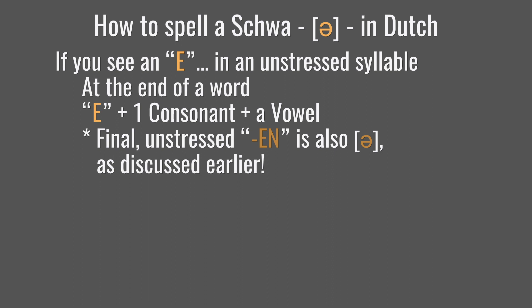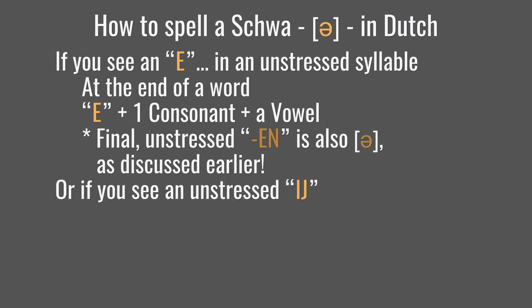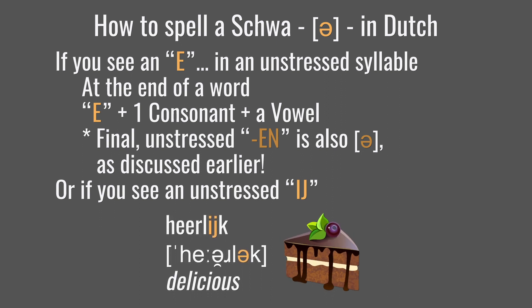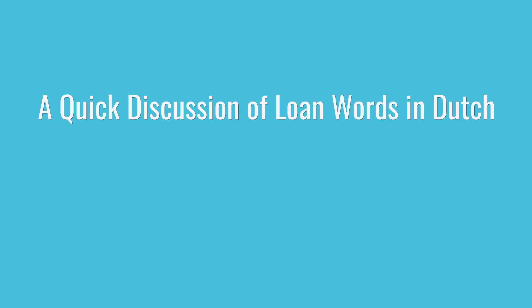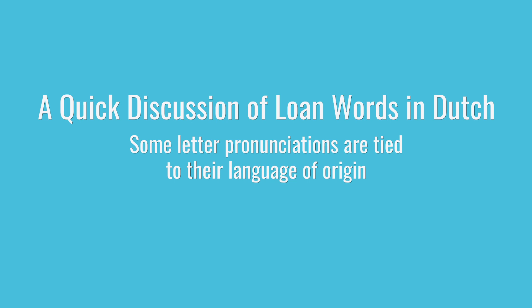We have one more vowel topic to cover and that has to do with the schwa — the unstressed uh sound we talked about in the last video. Schwa shows up in two possible spellings. One, whenever you see an e that by the rules we just discussed should be a long e sound, meaning that it's an e at the end of a word or it's in the middle of a word with only one consonant afterwards, but importantly, in this special case the e has to be in an unstressed syllable. In cases like that, you'll pronounce the e as a schwa. That gives you words like amandelen and meisje, where all of those unstressed e's are pronounced as schwas.